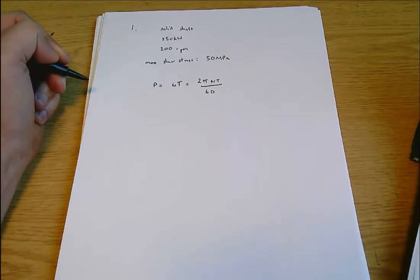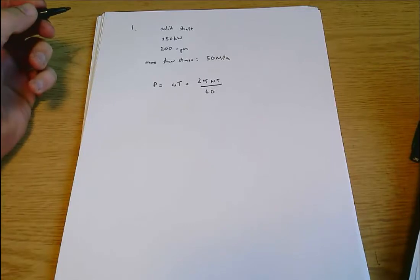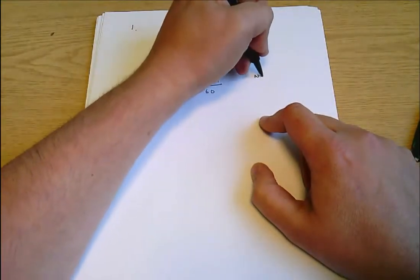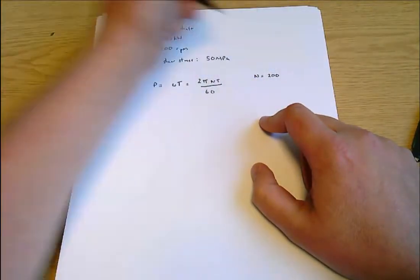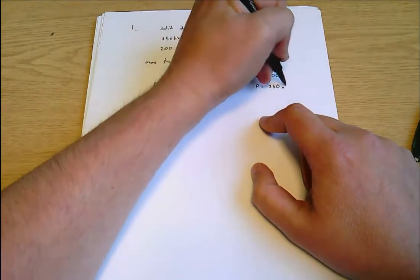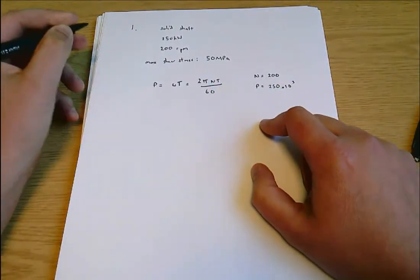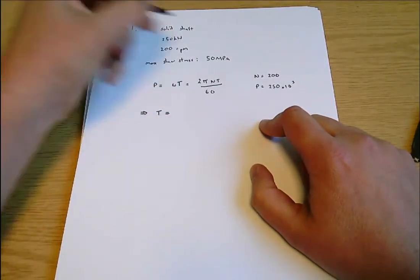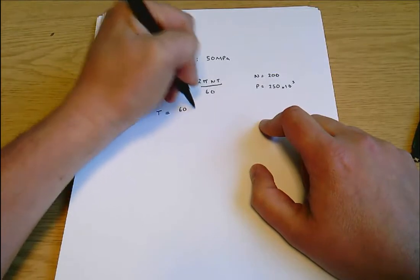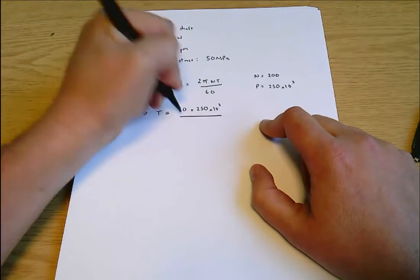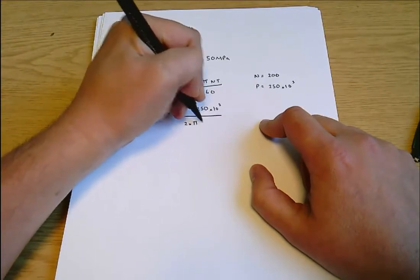It's 2π times 60 times n times t, so 2π times n times t divided by 60, and n is the speed in rpm so n here equals 200 and we know that P equals 250 kilowatts that's 250 times 10 to the 3 in watts and we can rearrange all that for t.